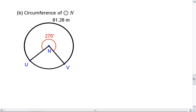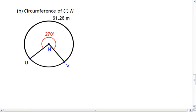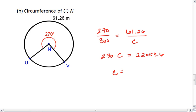For part B, I want to find the circumference. I know I have 270 out of a possible 360 degrees, and that the arc length is 61.26 meters. I'm looking for circumference. I cross multiply, I get 270 times C equals 360 times 61.26, which is 22053.6. To solve for C, I divide both sides by 270, and I find that the circumference is 81.68 meters.